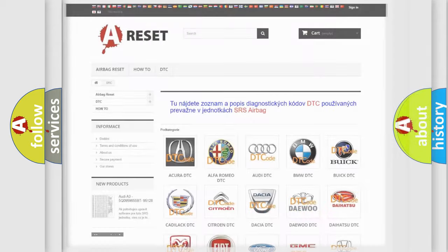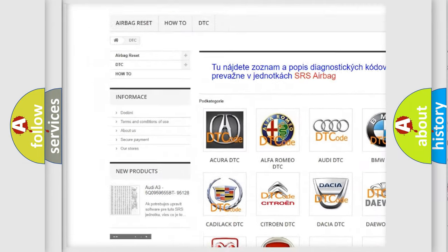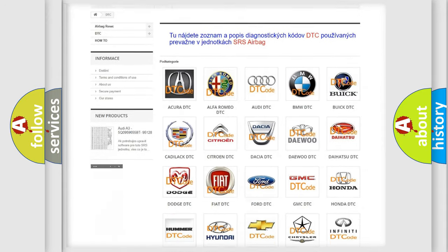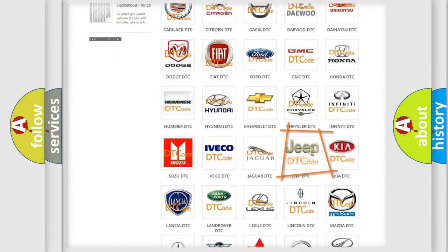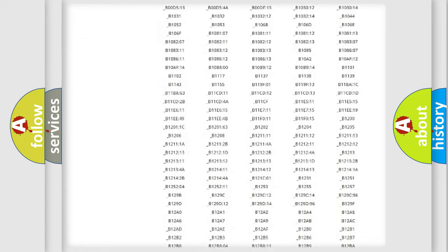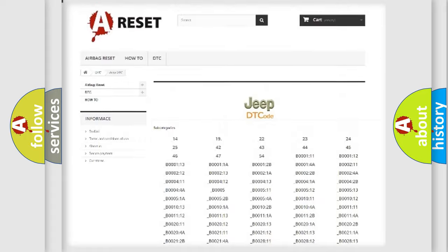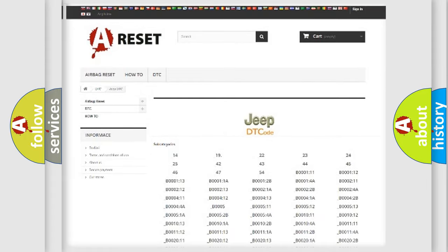Our website airbagreset.sk produces useful videos for you. You do not have to go through the OBD2 protocol anymore to know how to troubleshoot any car breakdown. You will find all the diagnostic codes that can be diagnosed in Jeep vehicles, and many other useful things.